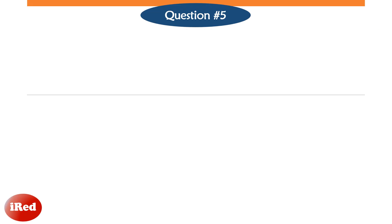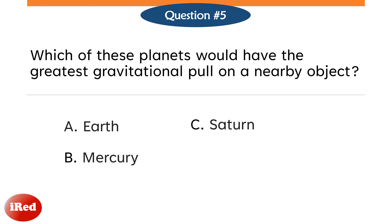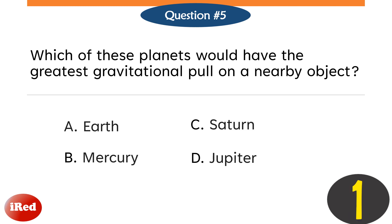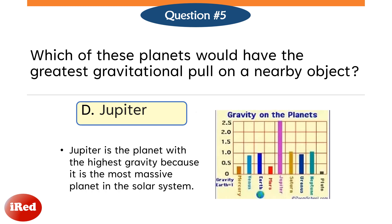Question number five. Which of these planets would have the greatest gravitational pull on a nearby object? Letter A, Earth. Letter B, Mercury. Letter C, Saturn. Or Letter D, Jupiter. The correct answer is Letter D, Jupiter. Jupiter is the planet with the highest gravity because it is the most massive planet in our solar system.